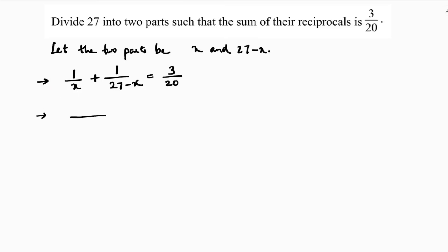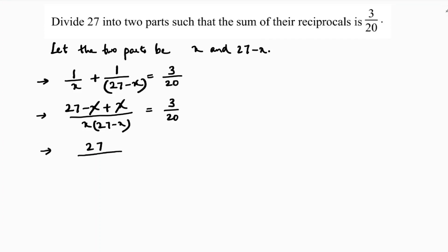Now taking the LCM as x into 27 minus x: I multiply the first term by 27 minus x and the second term by x, giving us 27 minus x plus x over x times 27 minus x equals 3 by 20. This simplifies to 27 over x times 27 minus x, which is 27x minus x squared equals 3 by 20.